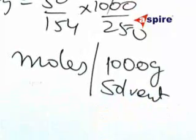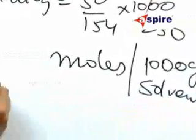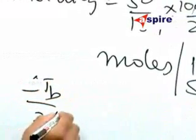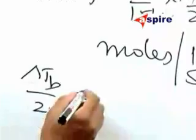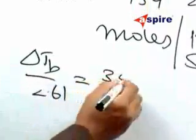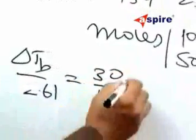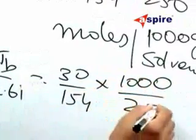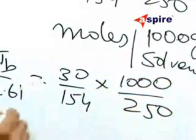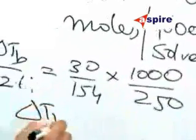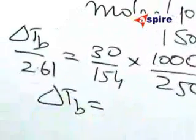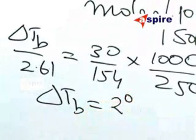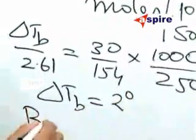So now delta Tb divided by 2.61 will be equal to 30 by 154 into 1000 divided by 250. From this we will calculate delta Tb to be equal to about 2 degrees.